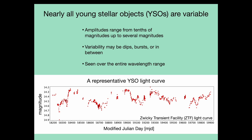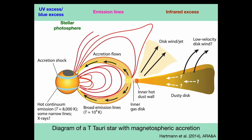A prominent characteristic of these objects is that they are all, to some extent, variable. What I've shown here is a representative light curve of a young star. We can see complex structure and brightness variations over the course of several years. This variability arises in the structure of these systems.